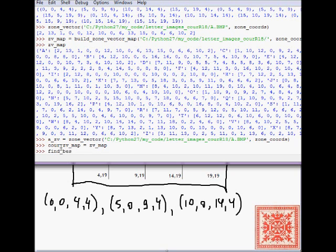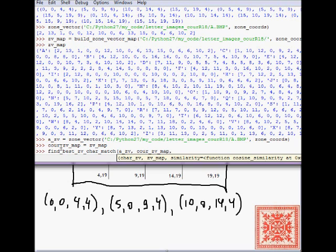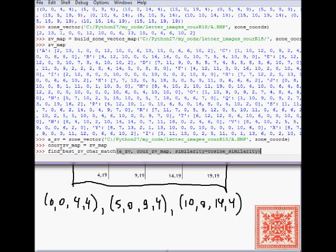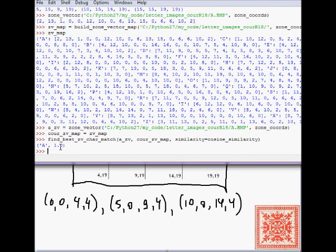So then find best zv character match takes a character, a zone vector for a character and a map. And it matches that zone vector to all of the zone vectors in the map with a specific similarity function that defaults to cosine similarity and returns the best match. So in this case, let's call it, the best match is A. Then the match is 1, 0, which is to be expected because it's the character of the same font.